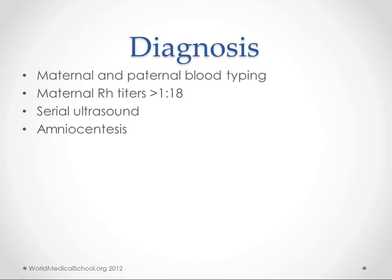In order to diagnose this, all mothers are tested. Generally, if they are RH negative, then the father will also be tested for his blood type. If he's positive, they're considered at risk. If that's the case, we get maternal RH titers, which measures the amount of antibodies in the maternal blood. If that level gets over 1 in 18, we start doing serial ultrasounds, or if that's not available, we do amniocentesis, to follow the baby and see if there's a significant amount of anemia.